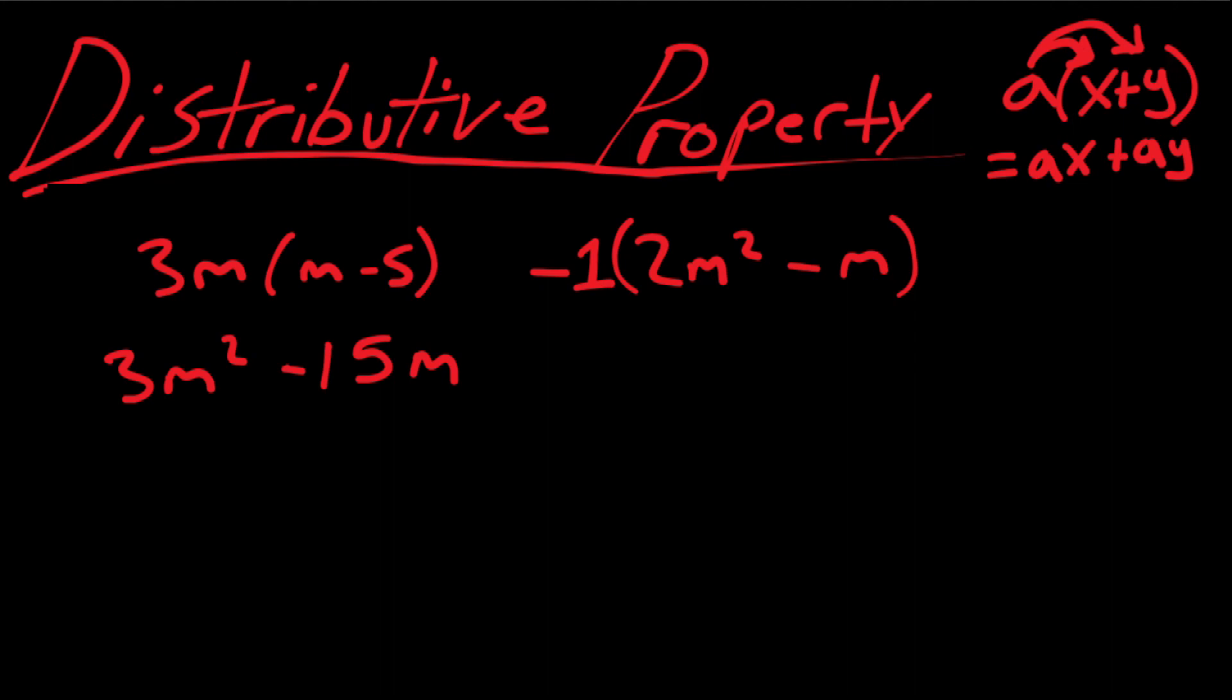You can think of it as I could multiply this entire bracket by negative 1 when I open up the brackets, when I expand. So here I would have minus 1 into that which is negative 2m squared. And then again into there which is negative times negative, which gives us plus m.